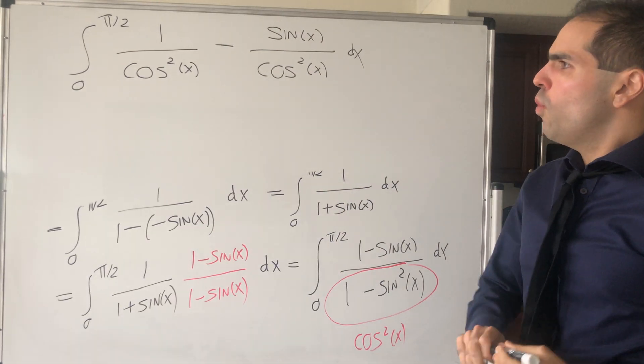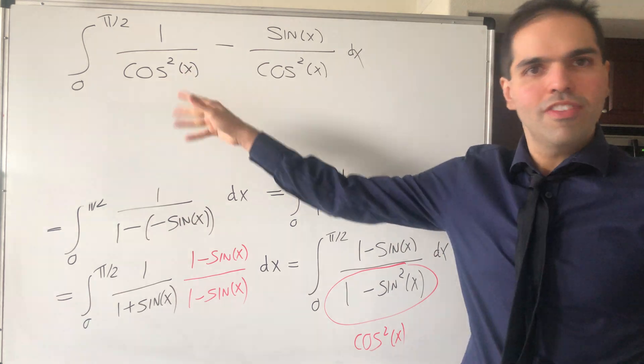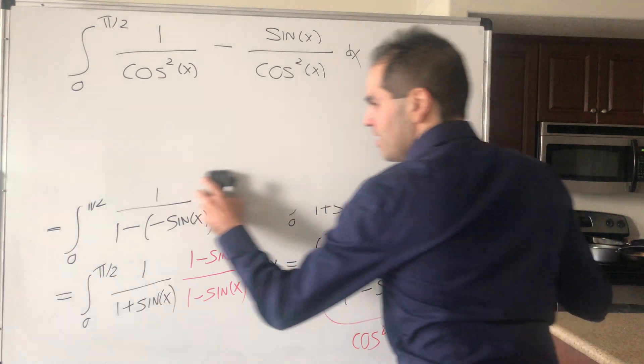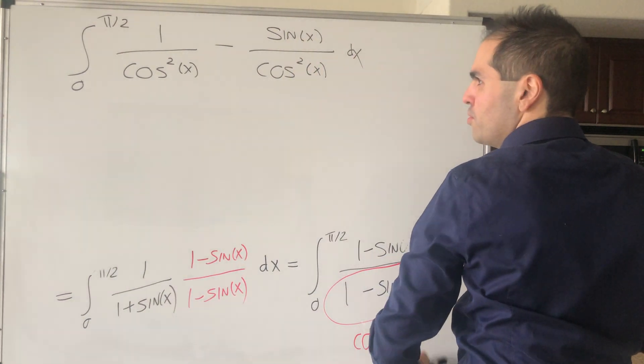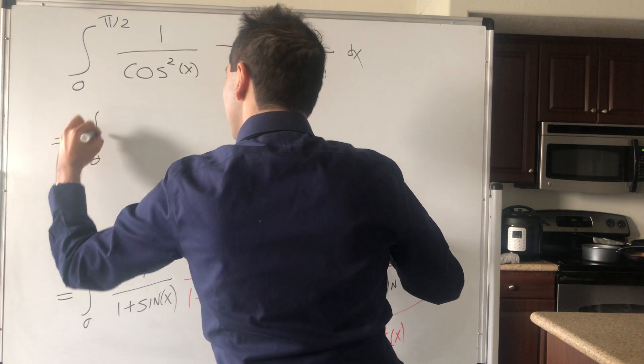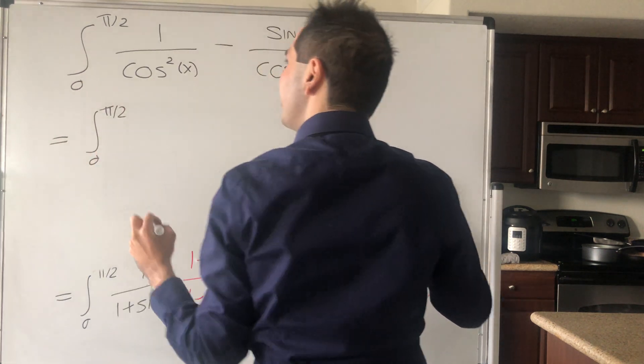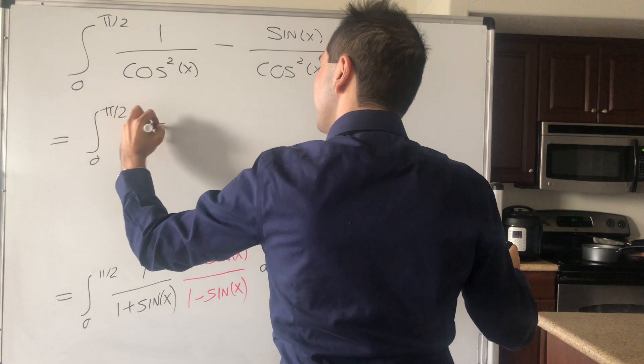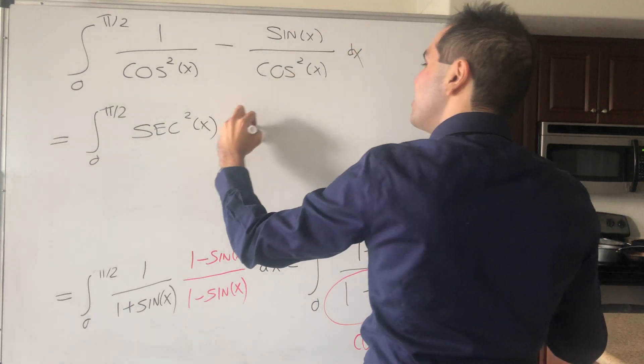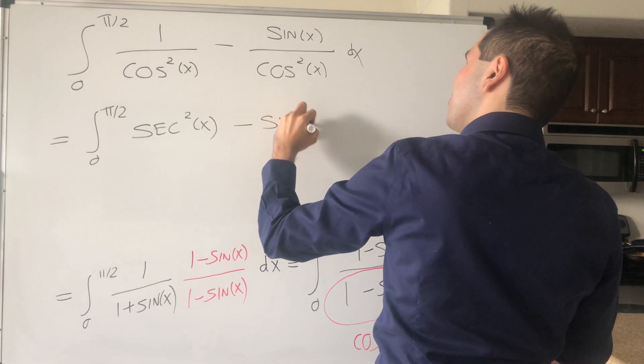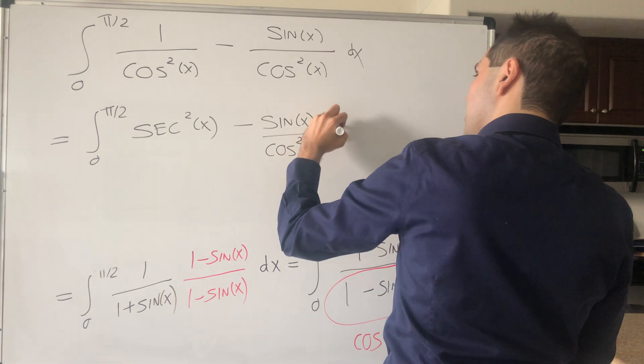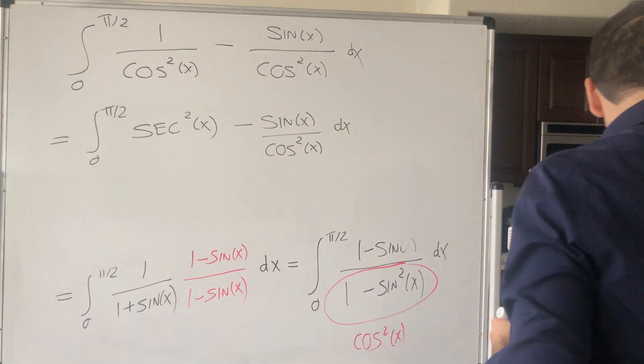Now, 1 over cosine squared of x in the US, at least, is known as secant squared of x. So you'll see a very famous anti-derivative soon. So integral of 0 to pi over 2 of secant squared of x, and then minus sin of x over cosine squared of x dx.